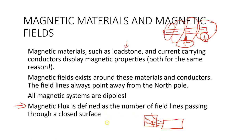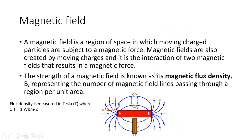Magnetic flux is equal to the magnetic field multiplied by the area: Φ = B × A. To find the magnetic flux, you take the magnetic flux density — which speaks to the strength of the magnet — and multiply it by the area through which the magnetic fields are passing. A magnetic field is the region of space in which moving charged particles are subjected to a magnetic force.